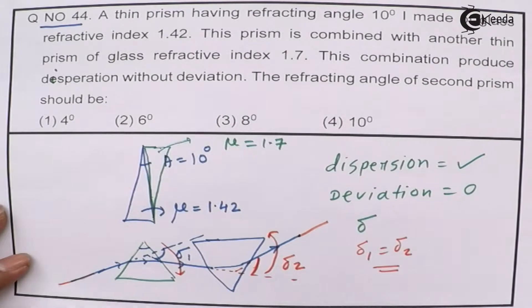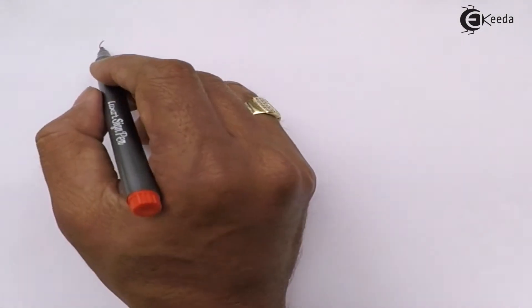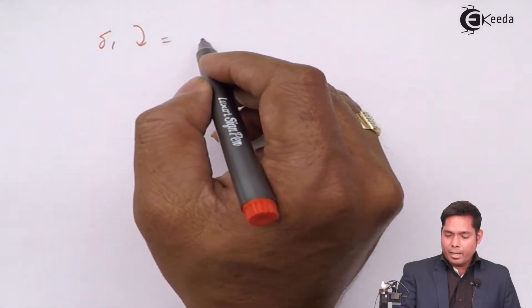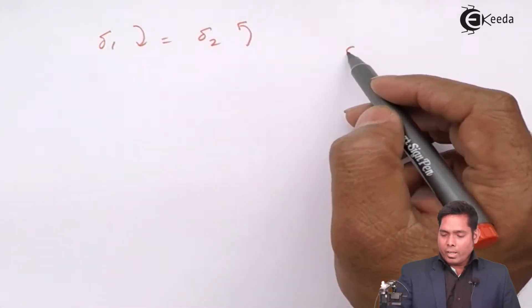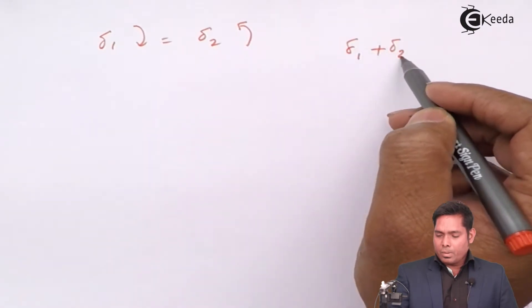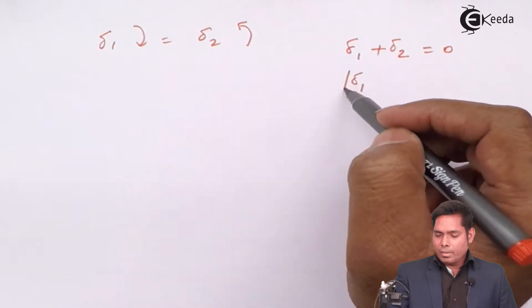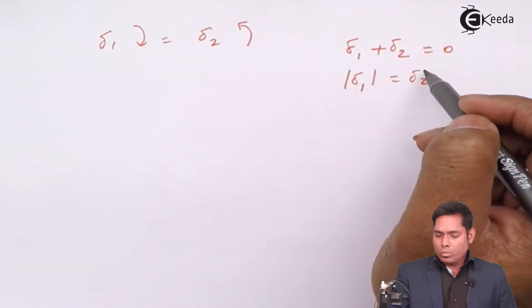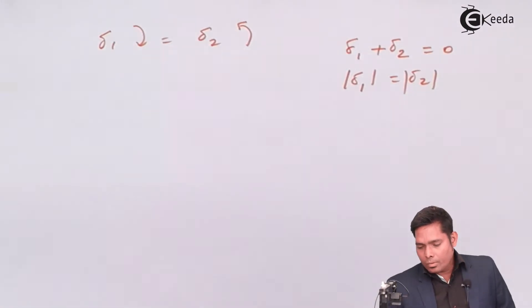That means delta 1 is equal to delta 2, you have to go for this relation. The clockwise deviation is balanced by anticlockwise deviation. You can write delta 1 plus delta 2 is 0. But magnitude wise, delta 1 mod is equal to delta 2 mod.